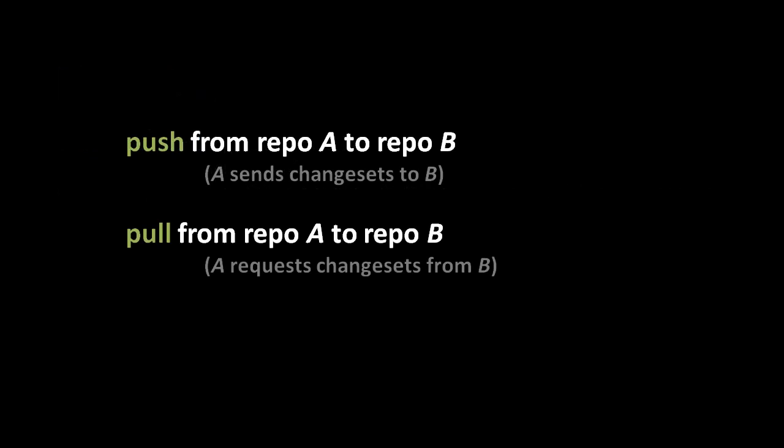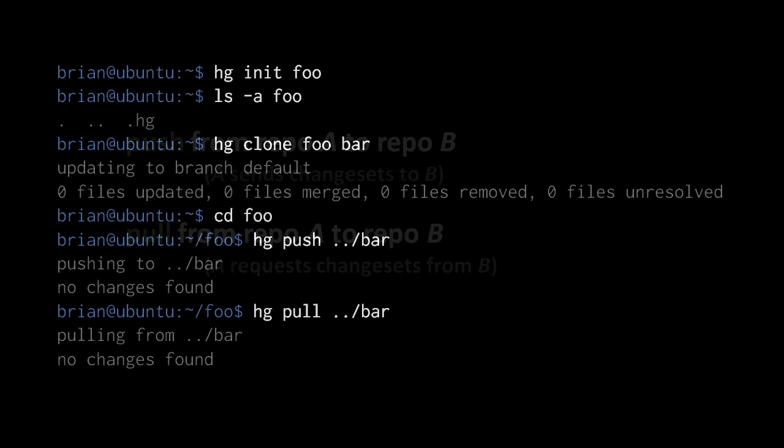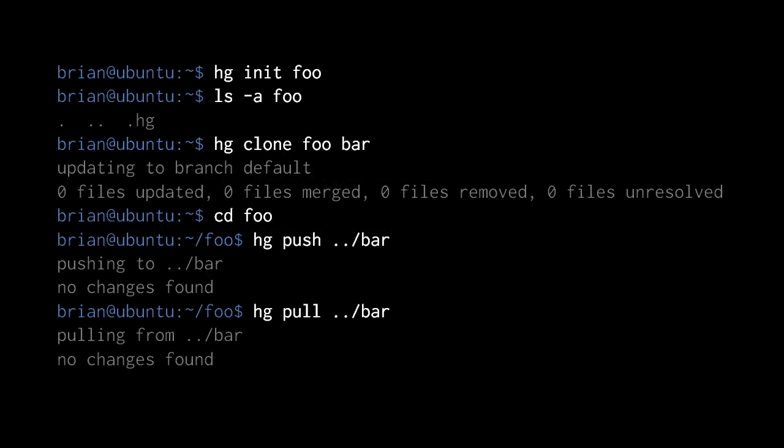To send change sets from one repository to another, we have two commands: push and pull. In a push, you're sending change sets from your repository to some other, whereas in a pull, you're bringing in change sets from some other repository into your own. Pushes and pulls are most commonly done between repositories on separate systems over the network, but also possible locally. If I want to push from foo to bar, I first change directory into the working directory of the foo repository, because the source repository is taken from the current working directory.